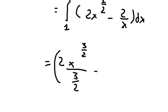This one, we have 2 ln of the absolute value of x. And we put the bounds from 1 to 4.